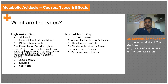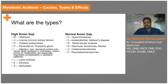High anion gap metabolic acidosis is caused by several common conditions remembered by the mnemonic MUDPILES: Methanol intoxication, Uremia (chronic kidney disease), Diabetic ketoacidosis, Paracetamol and Propylene glycol ingestion, Infections, Iron and Isoniazid (INH), and inborn errors of metabolism especially in pediatric patients. In addition, lactic acidosis generated as a consequence of anaerobic metabolism in conditions of shock can also produce a high anion gap metabolic acidosis.